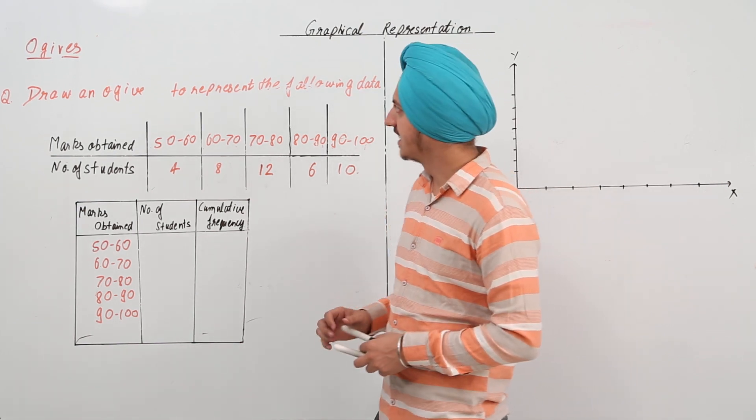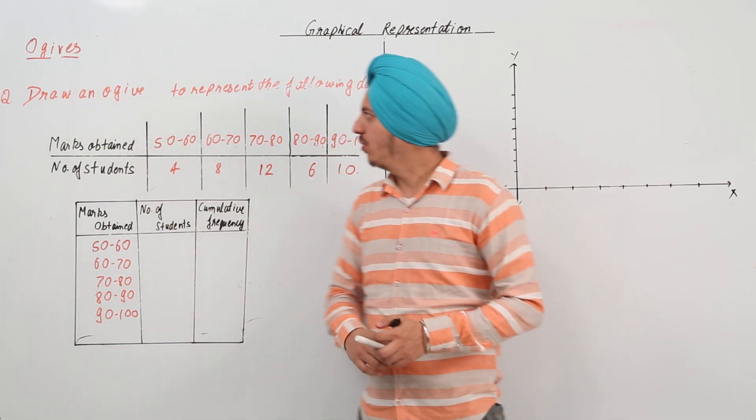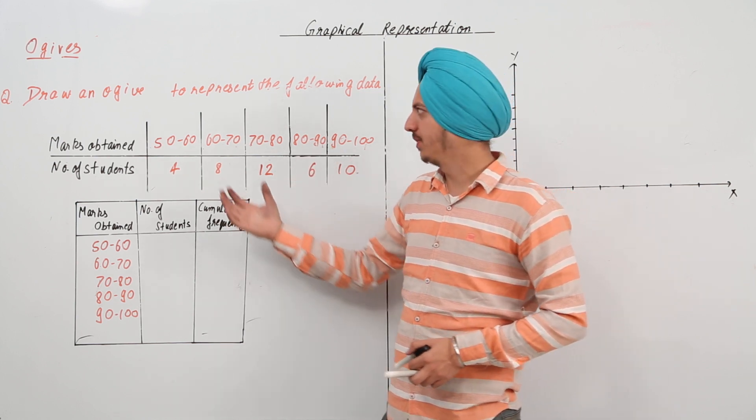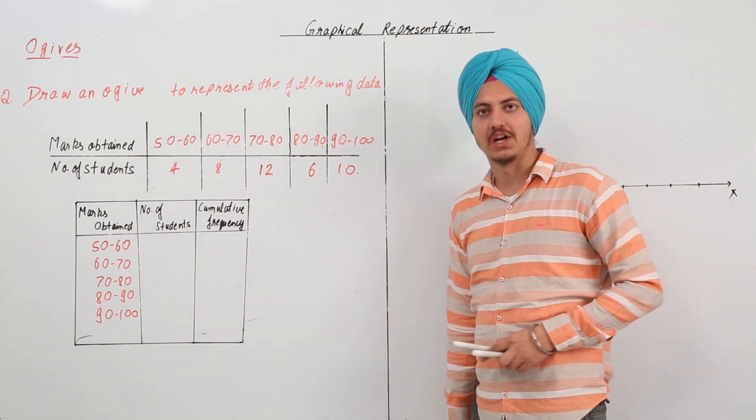Our next type of representation is ogives. Now, it says draw an ogive. I'll again explain it to you using an example. Draw an ogive to represent the following data.